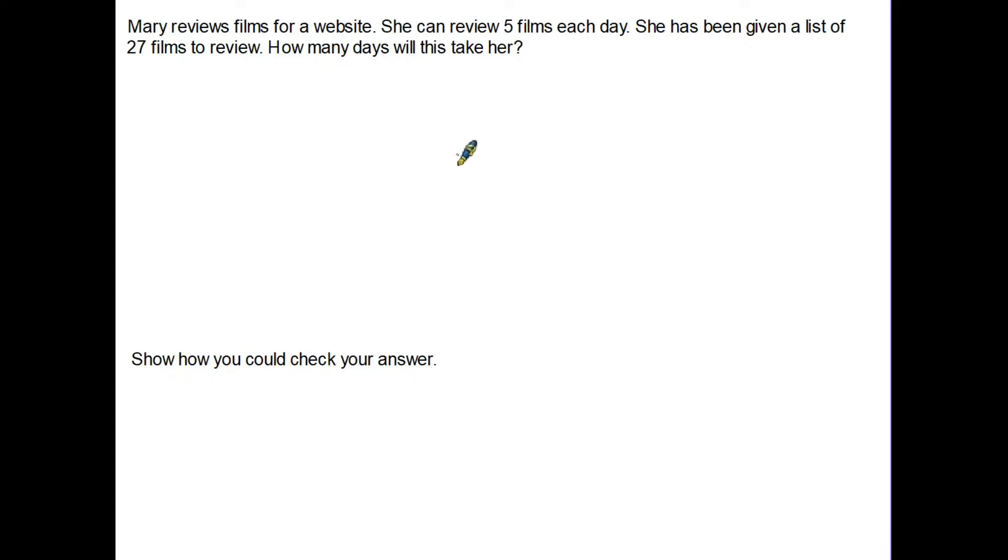The way we would answer this question to start with is by starting with the 27 films that she has to review, and if we are looking at how many days it's going to take her we would divide that by five because she can review five each day. So the question is how many fives in two? Five is bigger than two so we carry the two. Fives into 27 are five. Five fives are 25 so that must mean the two remaining to carry. We've run at the end of the number here so we put the decimal point in, add the nought. Fives into 24. So it's actually going to take Mary 5.4 days.